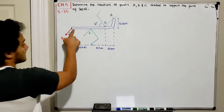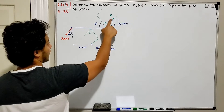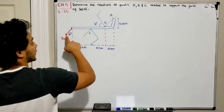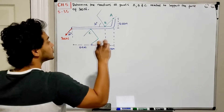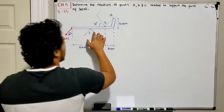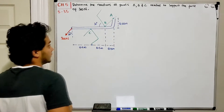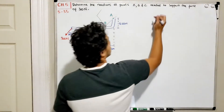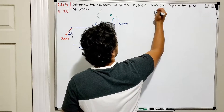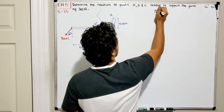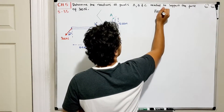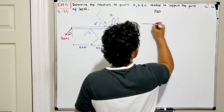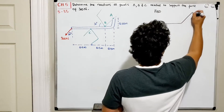We have our pipe that is shaped like an L. We have a 300 N force over here, and we have these smooth surfaces at A, B, and C supporting the pipe. In order to do this problem, we are going to draw a free body diagram, and our pipe looks something similar to this.